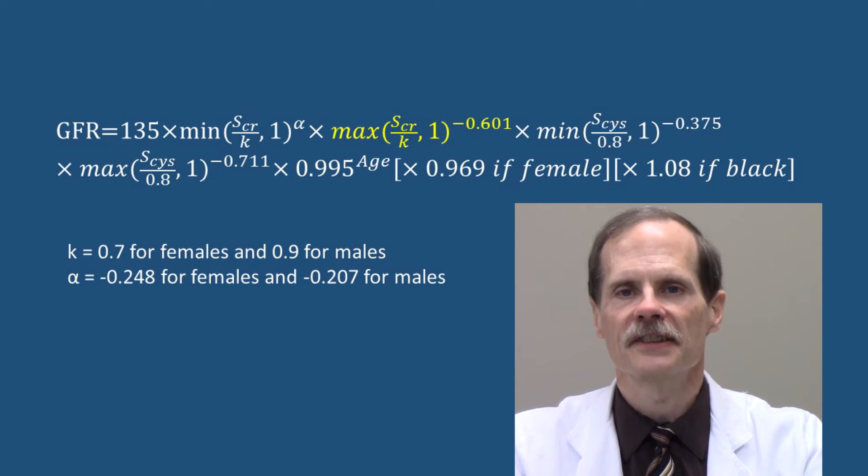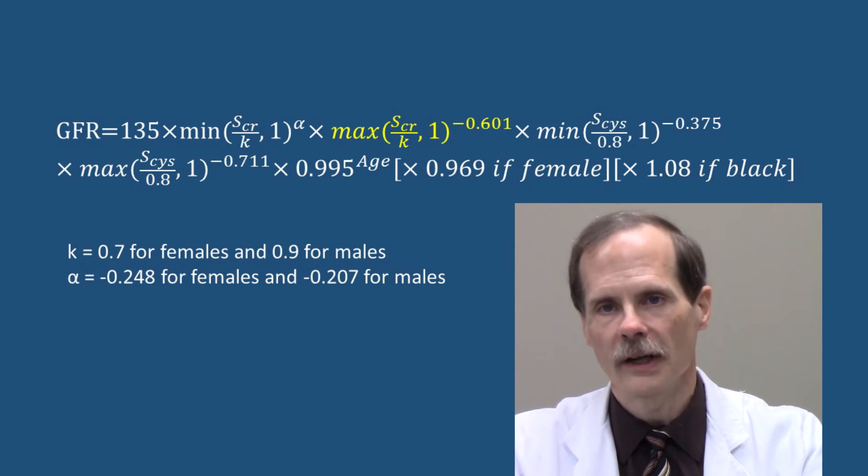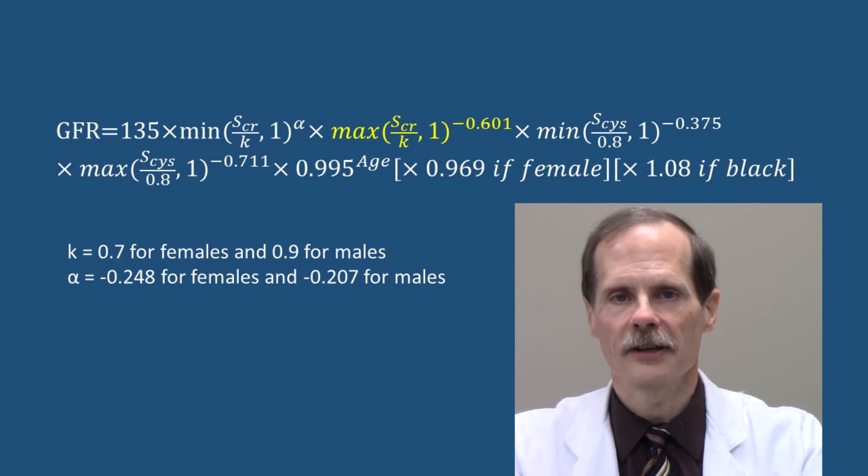For the next part, the clinician does the same thing, but uses whichever value is greater, the ratio of serum creatinine to kappa or one. Whichever value is greater is raised to the power of negative 0.601.